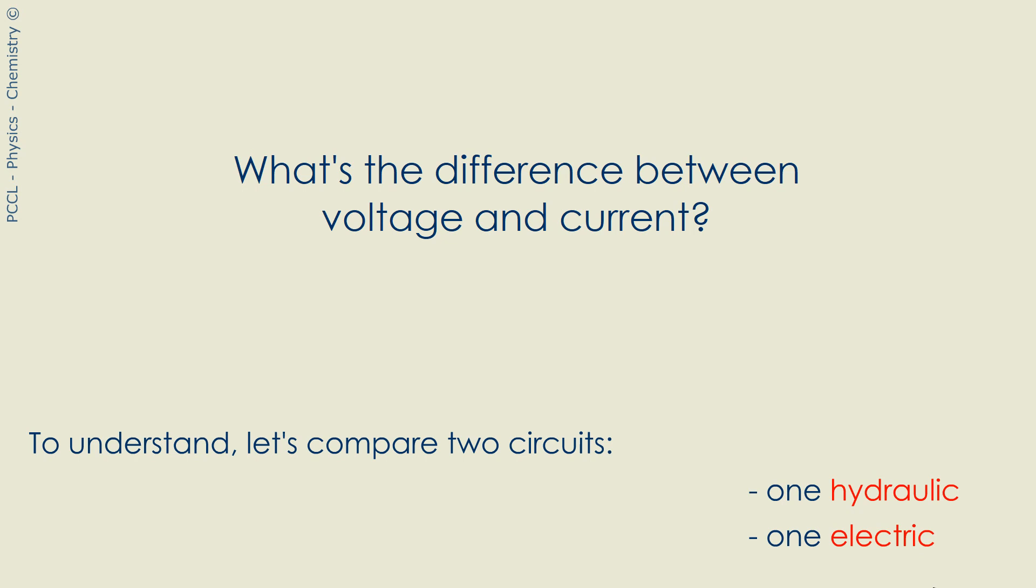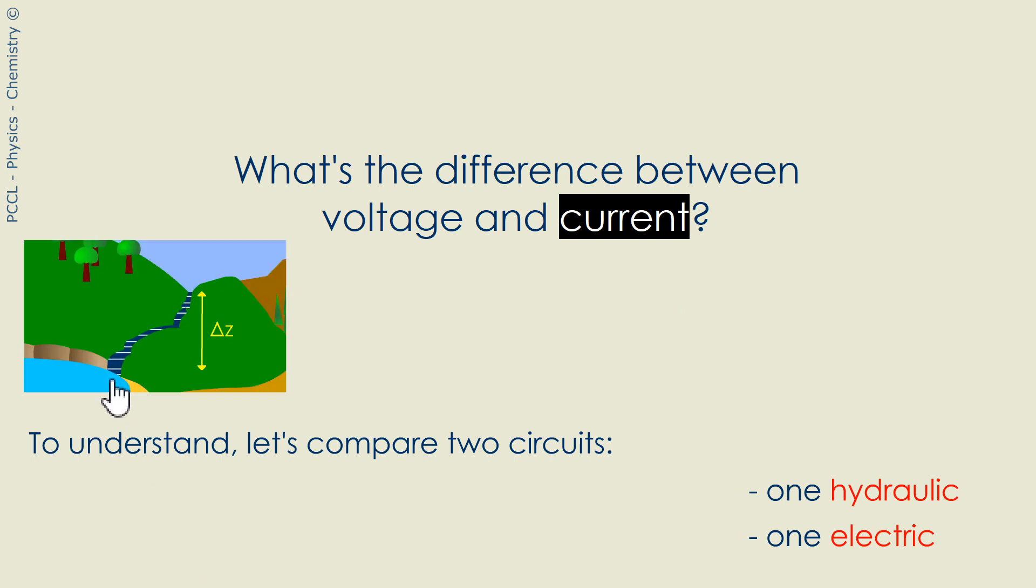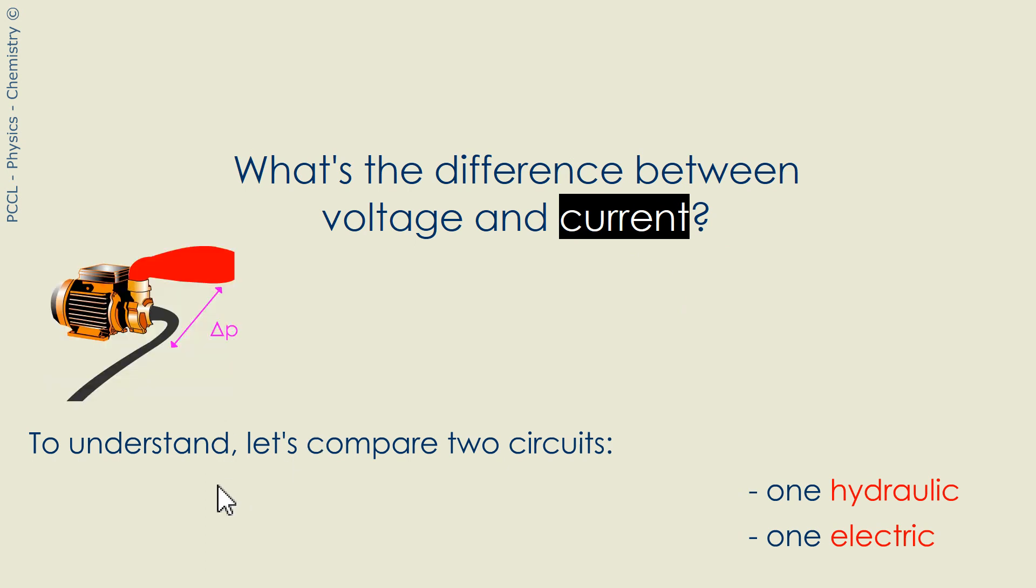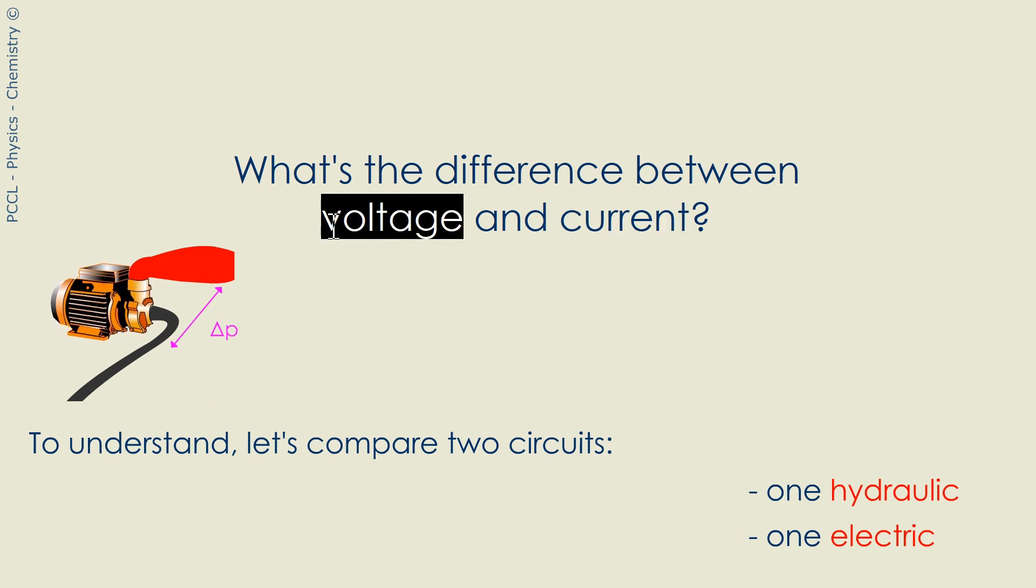In electricity, you'll hear about voltage and current. Current is the easiest notion to understand - when we talk about the current of a river, we see what it is. But we can ask ourselves the question: why is water moving? Water starts to move when there is either a difference in altitude between two points or a difference in pressure. In electricity, the cause is voltage.